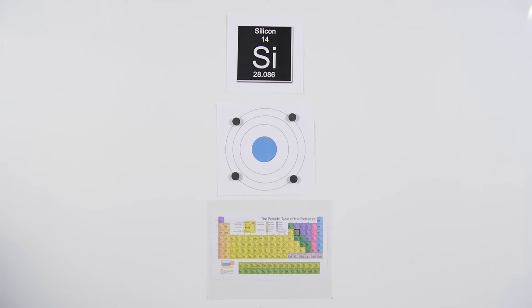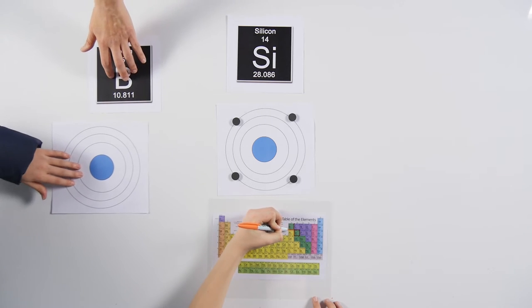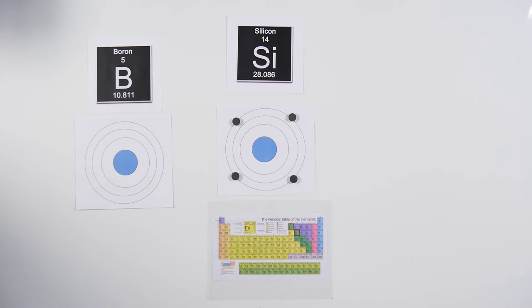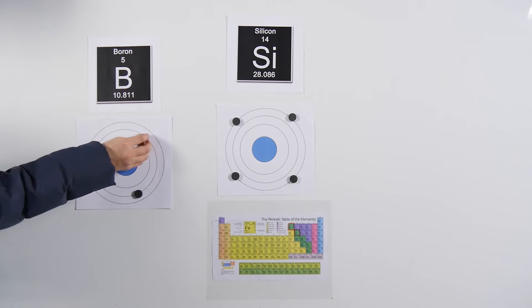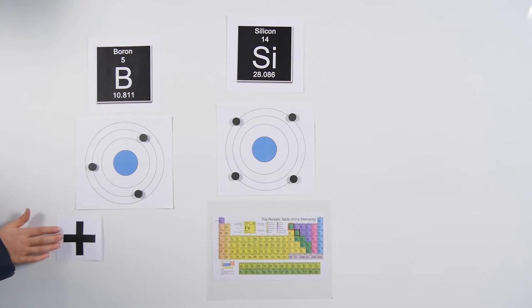The bottom layer of silicone is typically infused with boron. The outer electron shell of boron has three electrons, which is one fewer than silicone. This leaves the bottom layer of silicone with a slight positive charge and needing an extra electron in its outer shell. This is called p-type silicone because of the positive charge.